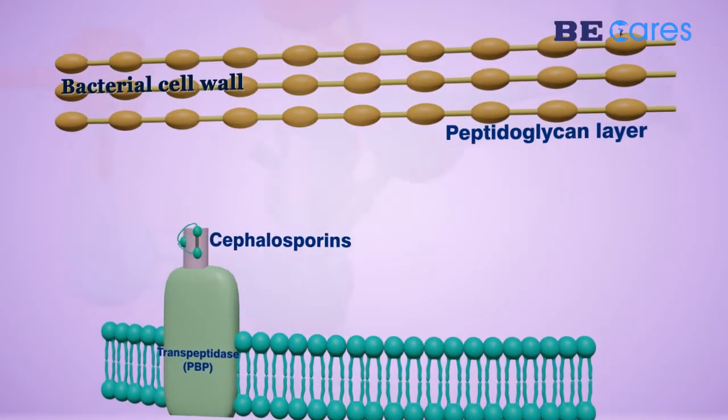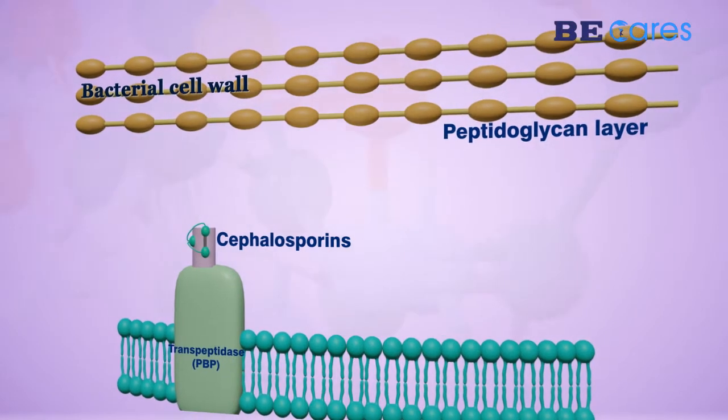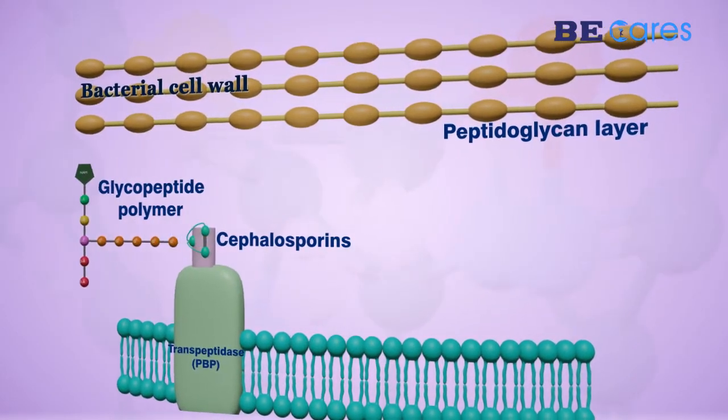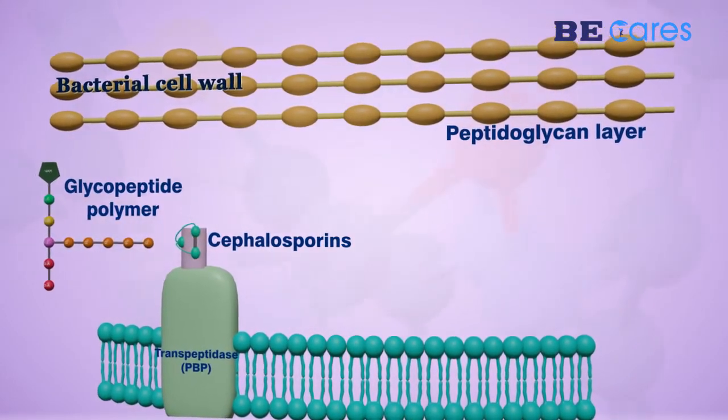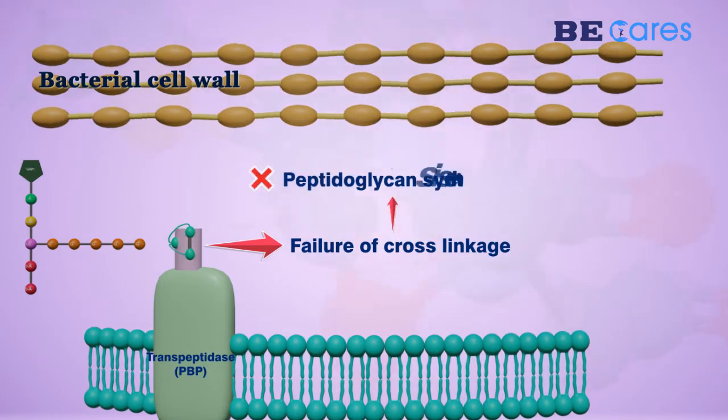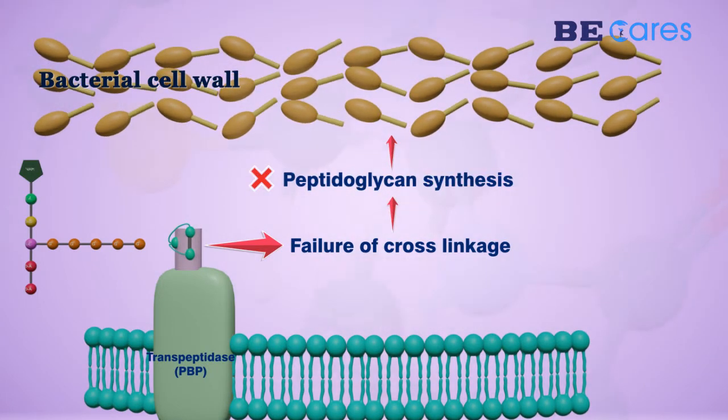This mechanism is said to be induced by acylating the transpeptidase via cleavage of the C-O-N bond of the beta-lactam ring.